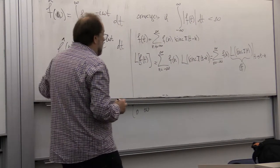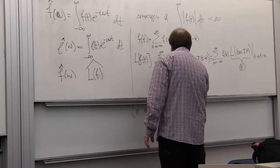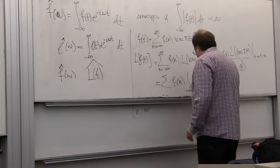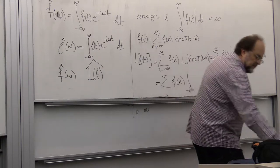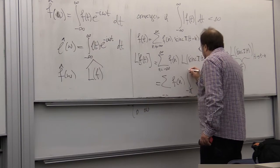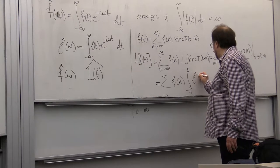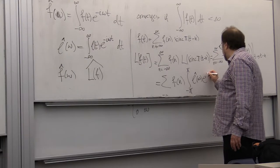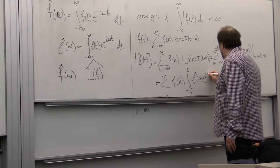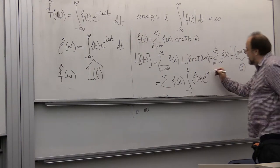We can represent it using its Fourier transform, so we get that this is equal to some f of n, integral from minus pi to pi of f-l-hat of omega, into e to the i omega t, but t will be replaced by t minus n.